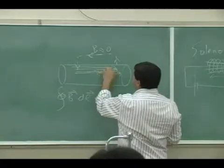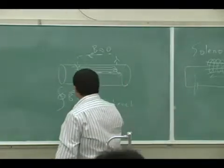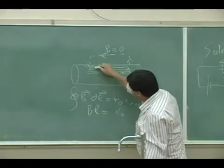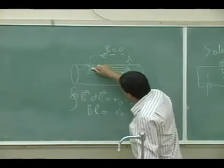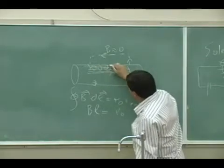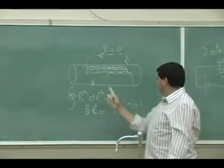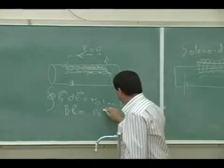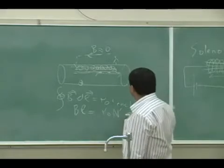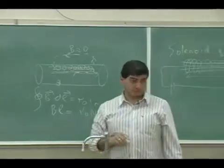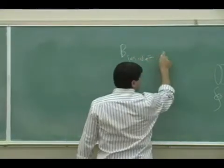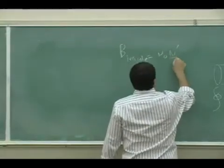So the only B dot dl that remains is along the inside edge, which gives B times the length of that segment. The current enclosed depends on how many wires pass through the loop — the wires are coming out and going back in, out, in, out, in — so the current enclosed is the number of loops N′ within that length, times the current I carried by each one. Therefore the magnetic field inside the solenoid is μ₀ N′ over L times I.